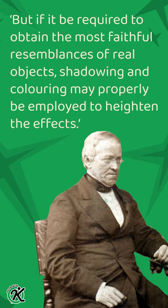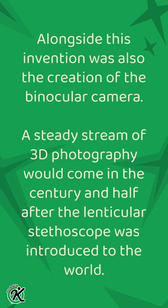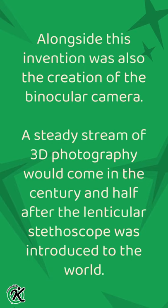Inventor of the kaleidoscope, David Brewster refined the idea with the first ever portable stereoscope in 1849, which he called the lenticular stereoscope. Alongside this invention was also the creation of the binocular camera. A steady stream of 3D photography would come in the century and a half after the lenticular stereoscope was introduced to the world, often in the form of postcards. But this wasn't the end goal of 3D, with even Sir Charles Wheatstone imagining a world of three-dimensional motion pictures.